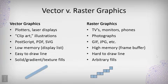In raster graphics — the graphics used for our televisions and phones — there is a rectilinear array of pixels, and these pixels are assigned colors. By assigning certain pixels certain colors, you can represent shapes.